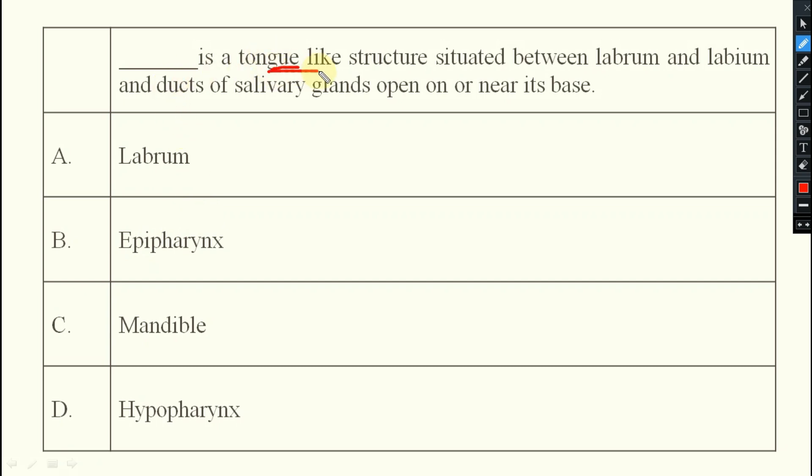Next you see, this is a tongue-like structure situated between labrum and labium and ducts of salivary glands open on or near its base. So here the answer will be option D, that is your hypopharynx. Just like a tongue-like structure, hypopharynx will be there and it is arising from the labial region, from the preoral cavity.